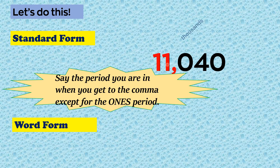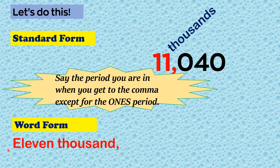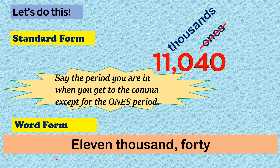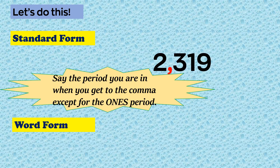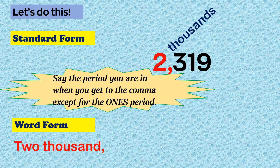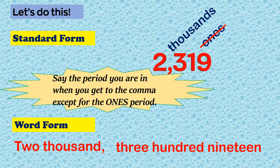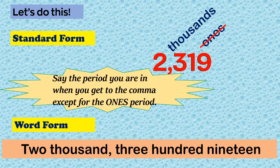For example, building up: 11,000 plus 40 gives us 11,040. Then 2,000 plus 319 gives us 2,319.